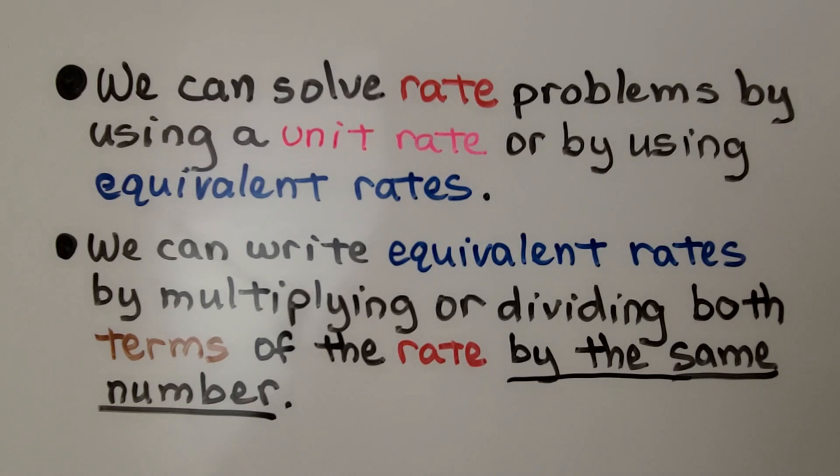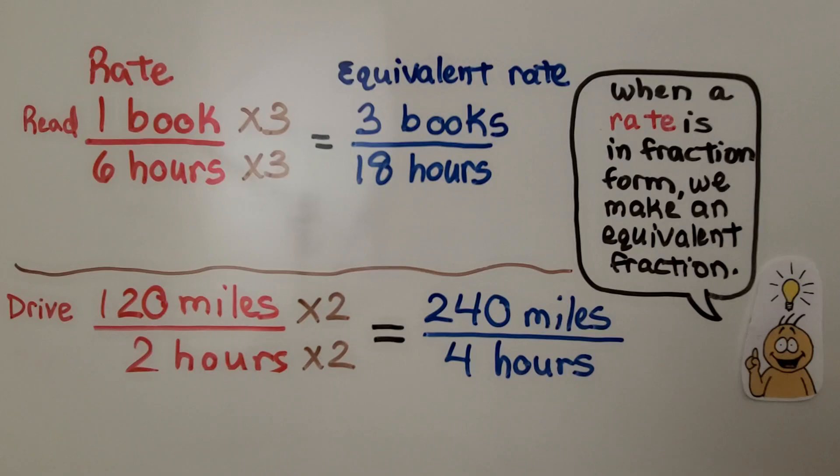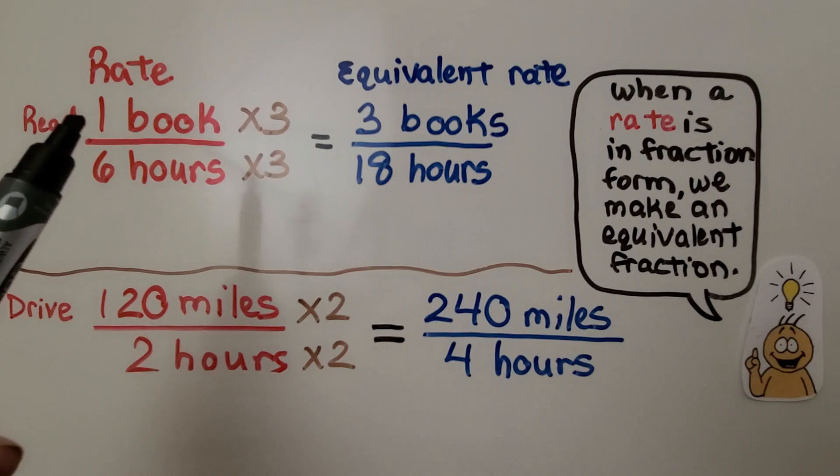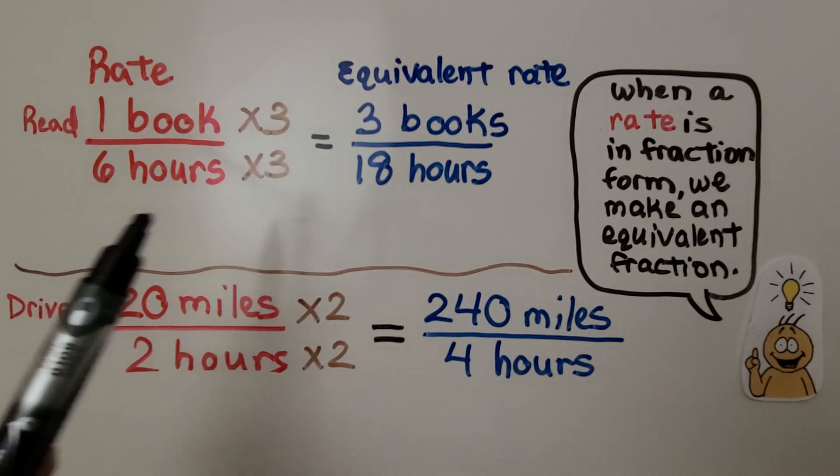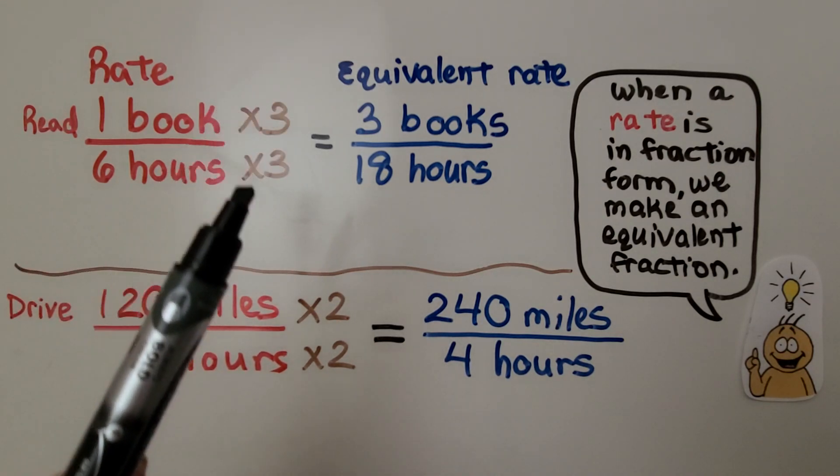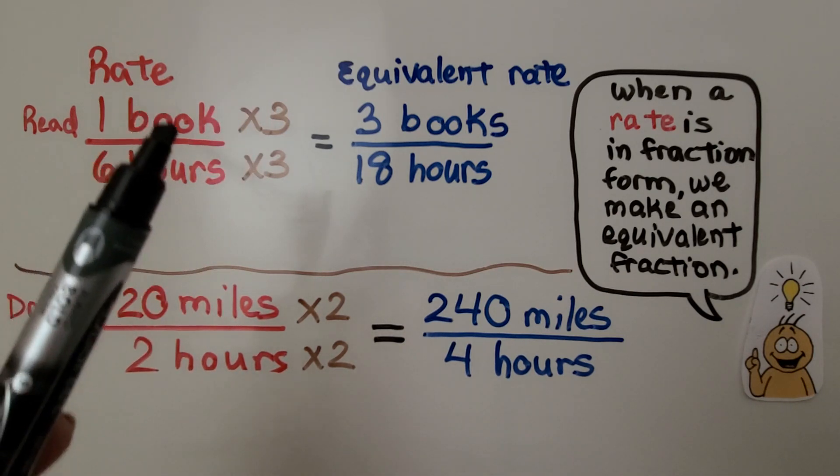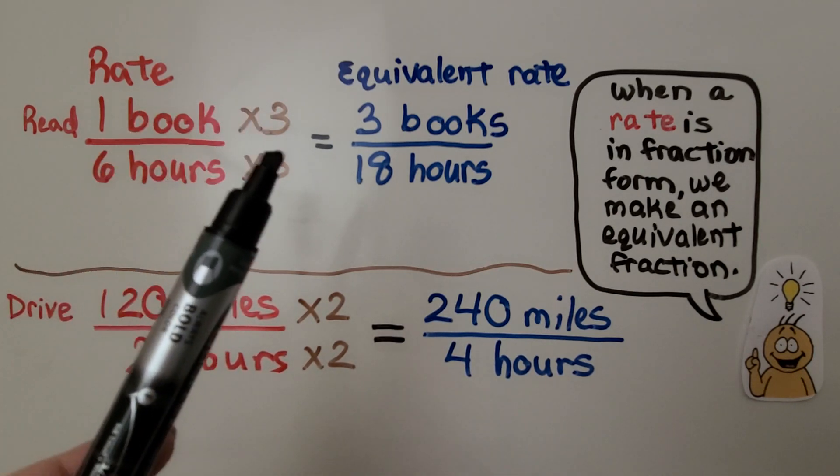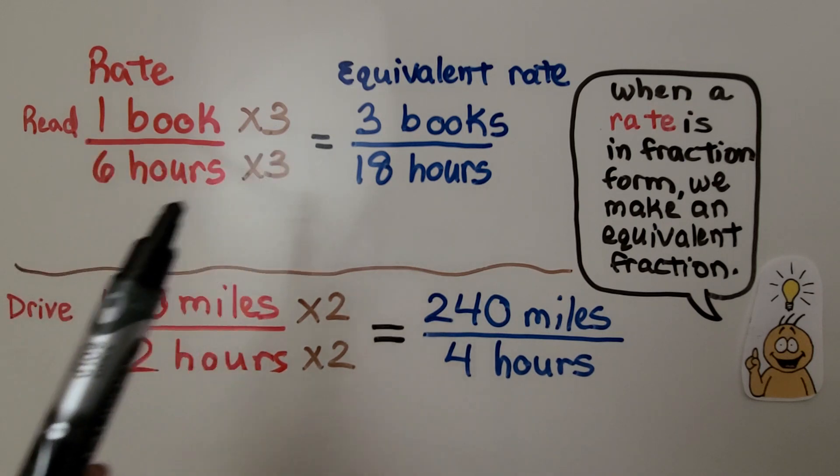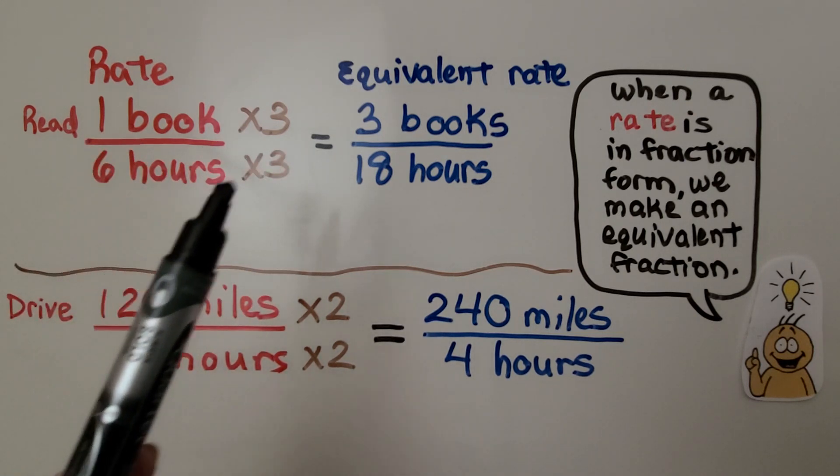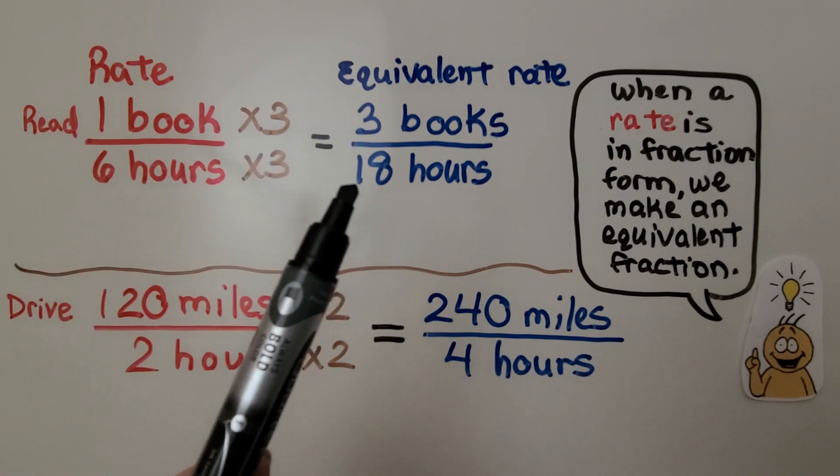We can write equivalent rates by multiplying or dividing both terms of the rate by the same number. Here's a rate: we read one book in six hours. We can make an equivalent rate by multiplying both terms by the same number. This means if we can read one book in six hours, we can read three books in 18 hours.